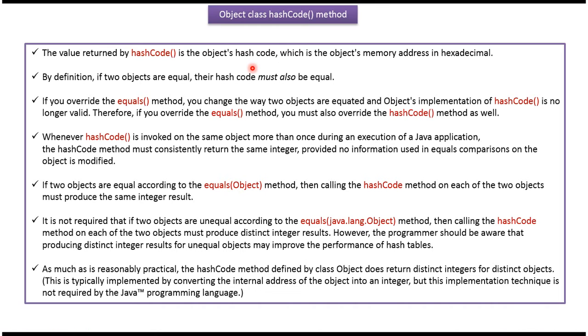The value returned by hashcode is the object's hashcode, which is the object's memory address in hexadecimal. By definition, if two objects are equal, their hashcode must also be equal.